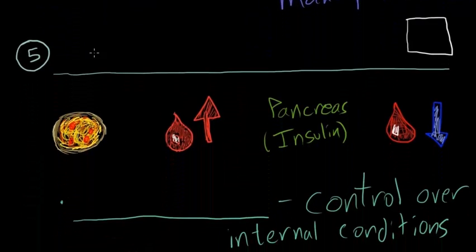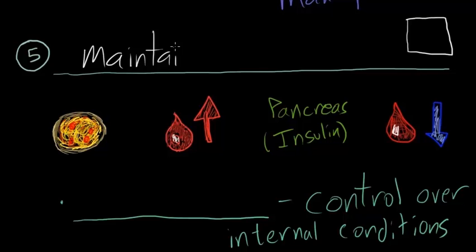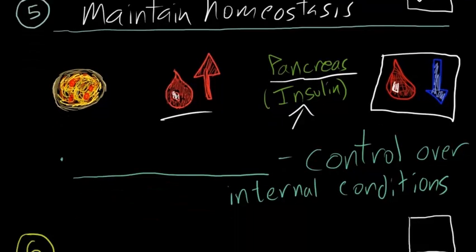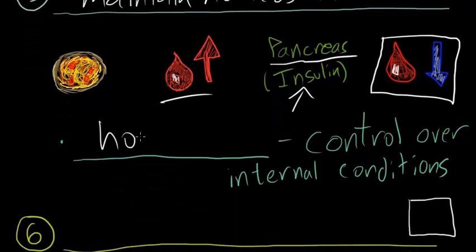Next we saw that all living things maintain homeostasis. We imagined going out to get pizza with some friends. Whenever you eat something your blood sugar level rises and a part of the body called the pancreas creates something called insulin which then causes the body to lower its blood sugar level. In this way the body is capable of maintaining a normal blood sugar level. It can maintain homeostasis and this is something that all living things do. Homeostasis is the control over internal conditions.